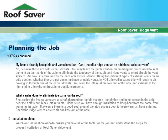To eliminate ice dams on the roof, ensure that intake vents are clear of obstructions in the attic — insulation and items stored near the soffits can block intake vents. Make sure you have enough insulation to keep heat from the home from warming the attic, and ensure a good seal around the attic access door to keep warm air from entering. Check the ridge vent to ensure air can flow out of the attic. Watch our installation video to ensure you have all the tools for the job and understand the steps for proper installation of Roof Saver Ridge Vent.